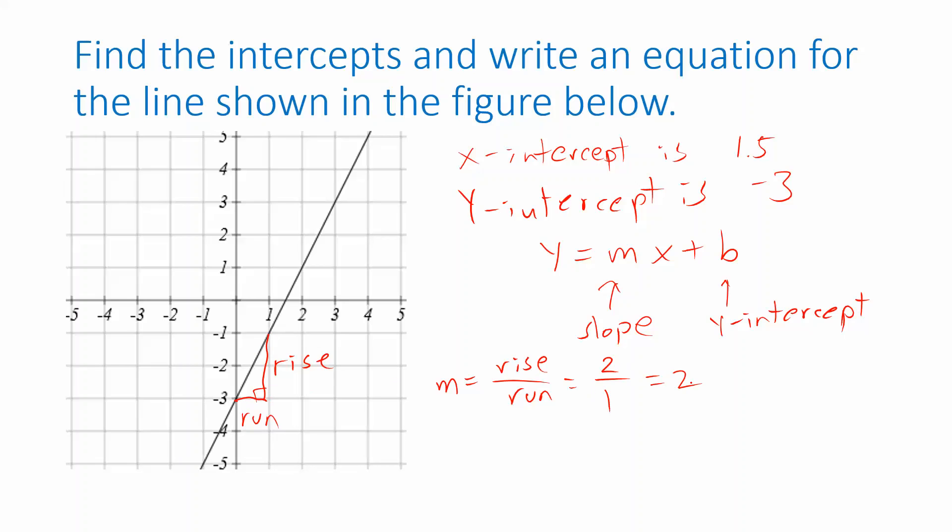And you'd get the same answer if you used a different triangle. For example, if I used this triangle, I'd end up with a rise of four units and a run of two units. So I'd get four over two, but that simplifies to the same value, that simplifies to two. So use whichever triangle seems to make your work the easiest. But it has to be a triangle like this with a horizontal line segment and a vertical line segment for the two sides. And then your line becomes the hypotenuse.